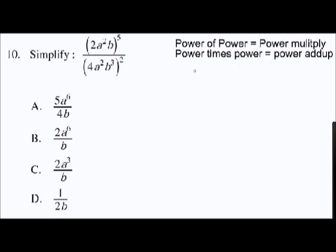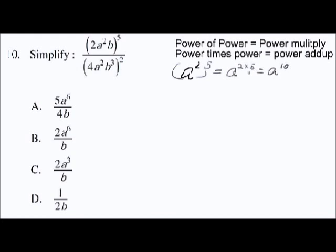For example, we have 2 to the power of 8, to the power of 2, to the power of 5 — that's power of the power, so we multiply: 2 times 5 equals 10, giving us 2 to the power of 10. If we have 2 to the power of 2 times 2 to the power of 5 — that's power times power — we add: giving us 2 to the power of 7.